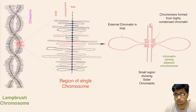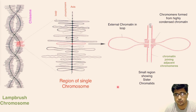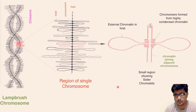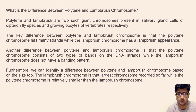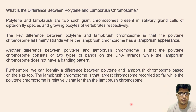Both polytene and lampbrush chromosomes are giant chromosomes that are stage-specific or tissue-specific. There are several similarities and differences between them that can be organized into a comparison chart.